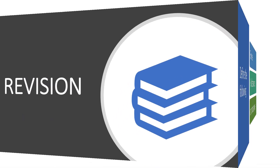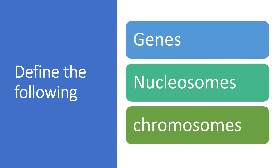Revision. Define the following. Genes: genes are specific sequences of nucleotides on a chromosome that encode particular proteins which express in the form of some particular feature of the body. Nucleosome: a DNA strand wound around a core of 8 histones. Chromosomes: the condensed form of chromatin fibers.